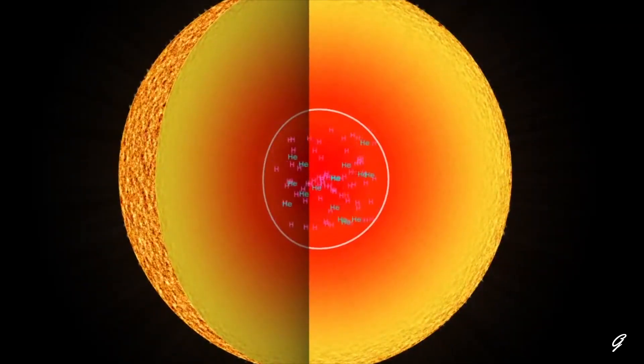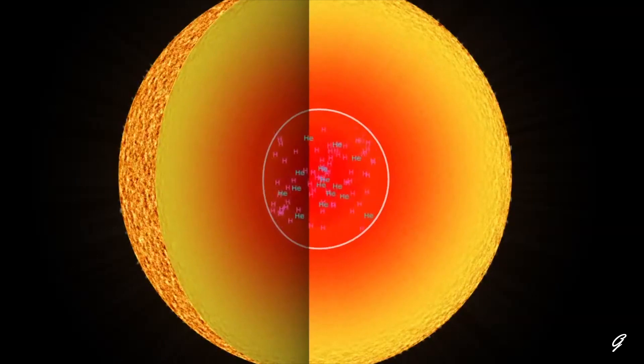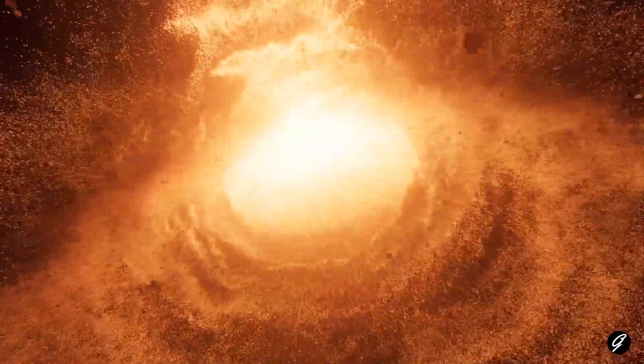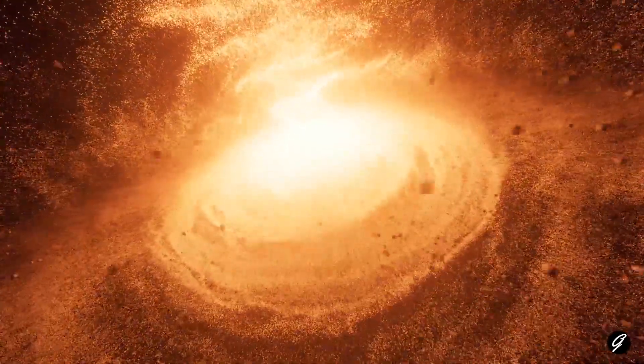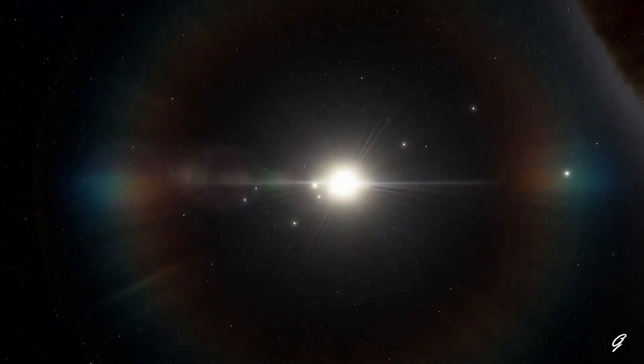The star's core is no longer producing enough heat and pressure to counteract the inward pull of gravity. Without this outward pressure, the star's outer layers begin to collapse inward under the force of gravity.